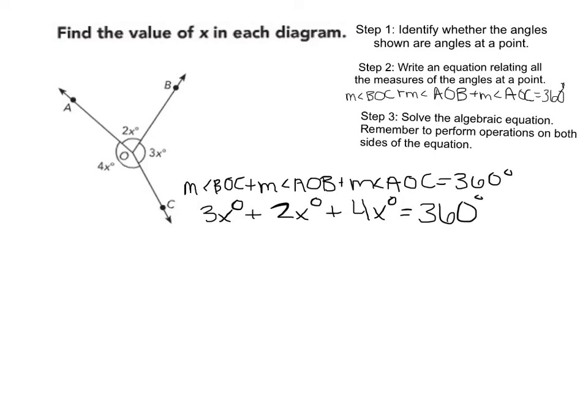So let's now combine our like terms. So I see I have an x, an x here, and an x here. So I have a total, I have 3x plus 2x plus 4x. So 3 plus 2 gives me 5x, and adding another 4x will give me 9x degrees, equaling 360 degrees.